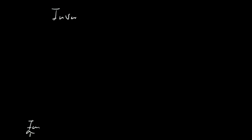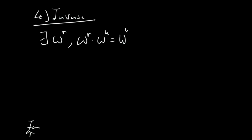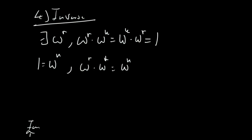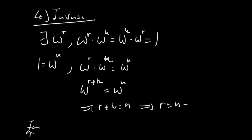Finally, this brings us to the fourth axiom: the existence of an inverse for each element. We need to show there exists some omega to the r such that omega to the r times omega to the k equals omega to the k times omega to the r equals 1, the identity element. Since we're dealing with n roots of unity, it's helpful to write 1 as omega to the n by our definition of omega. So we require omega to the r times omega to the k equals omega to the n, meaning omega to the r plus k equals omega to the n, which is true if r plus k equals n, and therefore r equals n minus k.